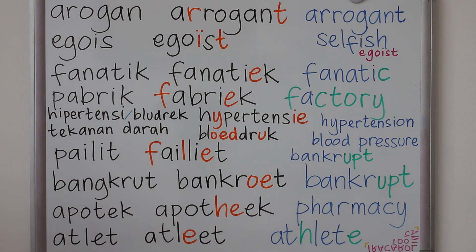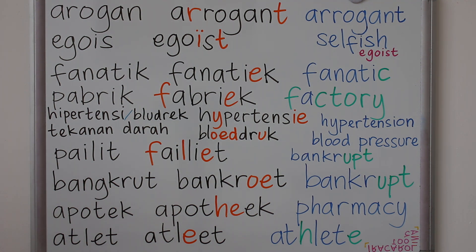Remember Indonesian R? It sounds like 'errr.' English and Dutch R is more of a standard R sound, while Indonesian R is trilled: 'errr.' And the G sound is similar to 'ga,' 'ga,' 'go.' Let's start.